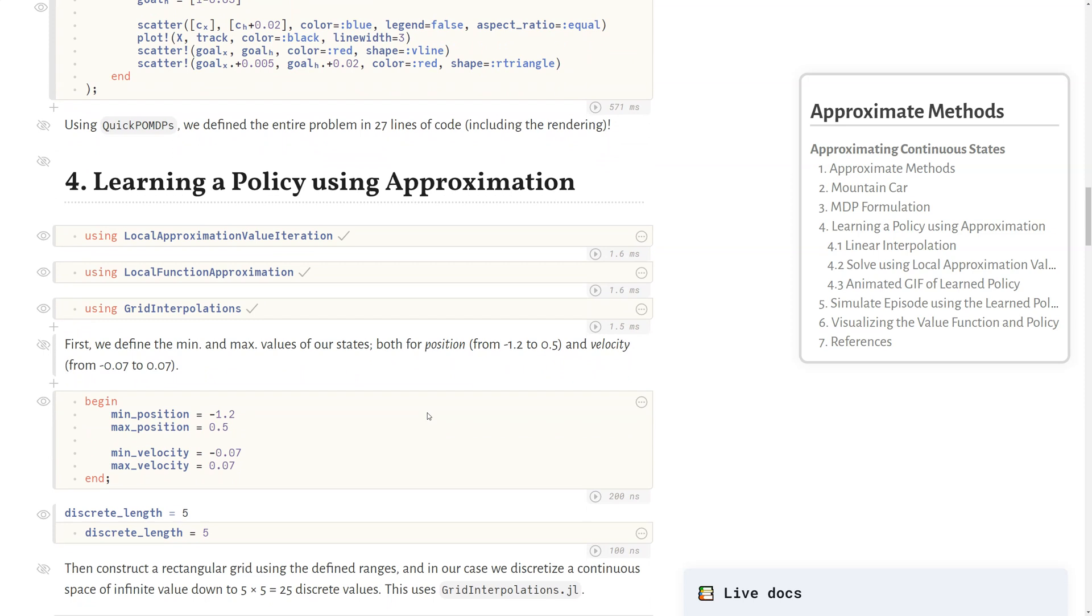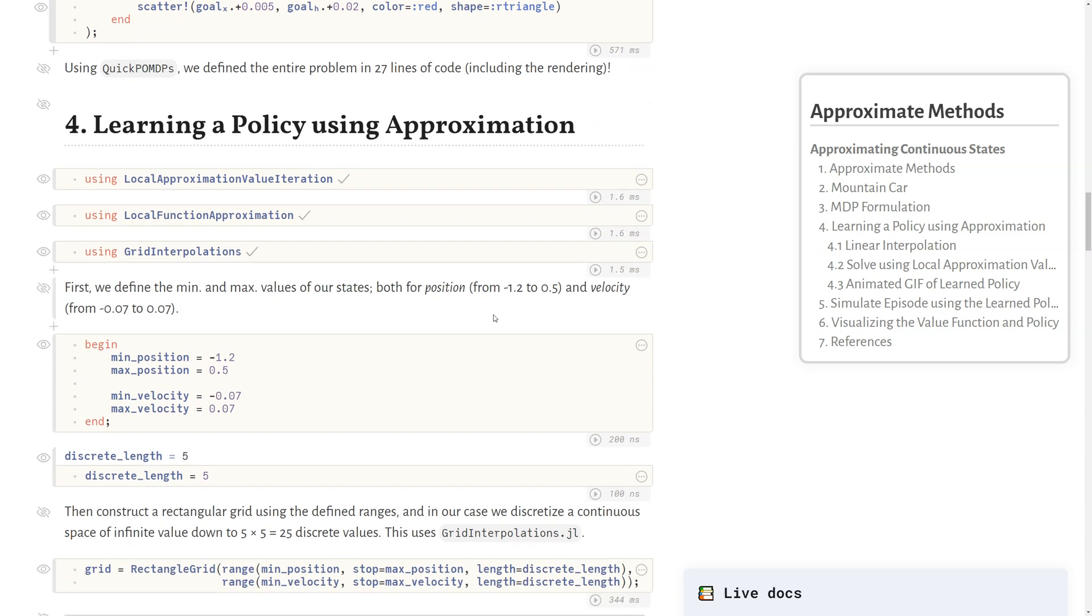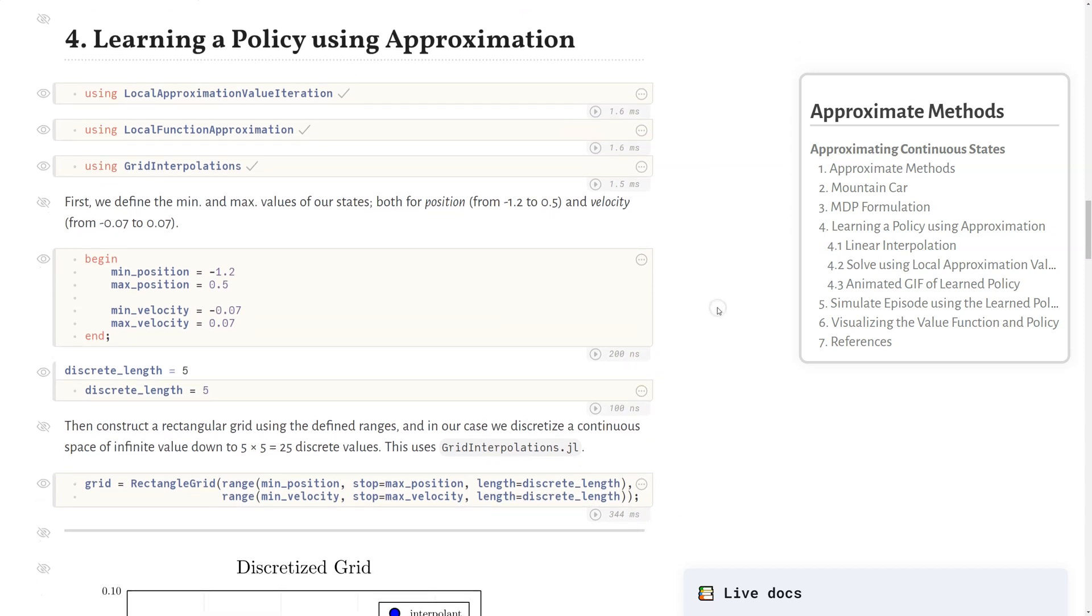So how do we learn a policy using approximation? This is where it gets fun. The idea is we want to discretize this infinite space of positions and infinite space of velocities that our agent could actually be in into something finite. First, we want to define the min and the max values of our states both for position which is negative 1.2 and 0.5, and for velocity which is negative 0.07 and positive 0.07.